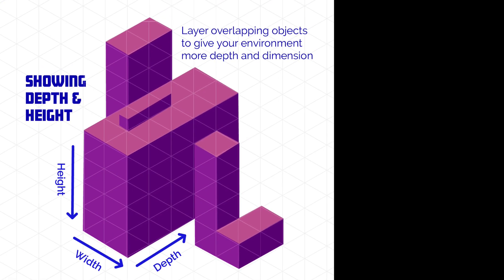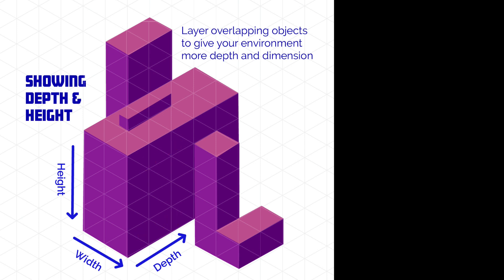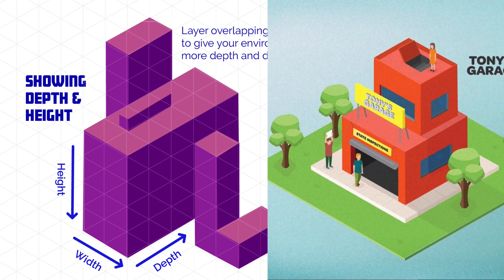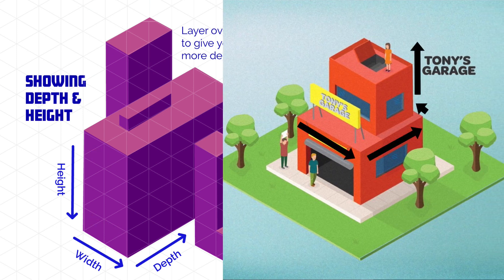We also need to talk about showing depth and height using the isometric grid. You can show height by extending items upward, show depth by extending items to the upper right or left diagonally, and show width by extending objects diagonally downward or upward.